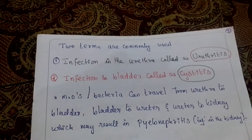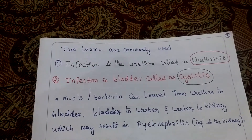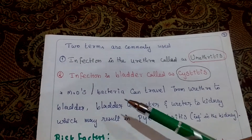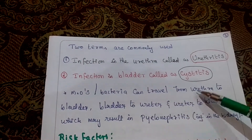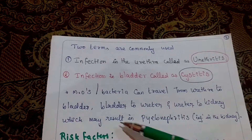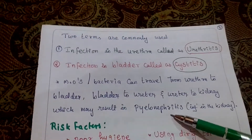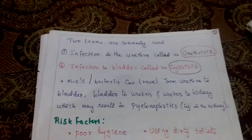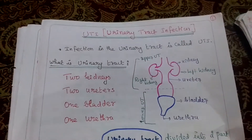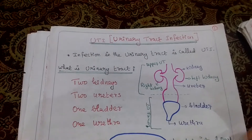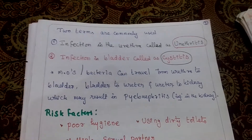Two important terms: infection in the urethra is called urethritis, and infection in the bladder is called cystitis. Microorganisms or bacteria can travel from the urethra to the bladder, bladder to the ureter, and ureter to the kidney, which may result in pyelonephritis — meaning infection in the kidney.